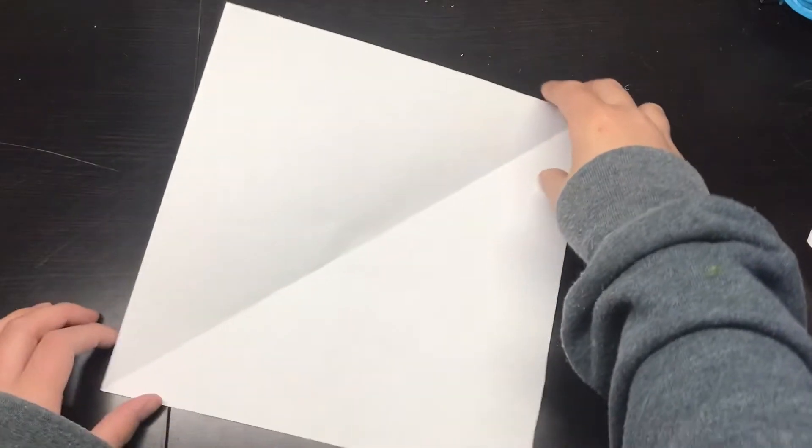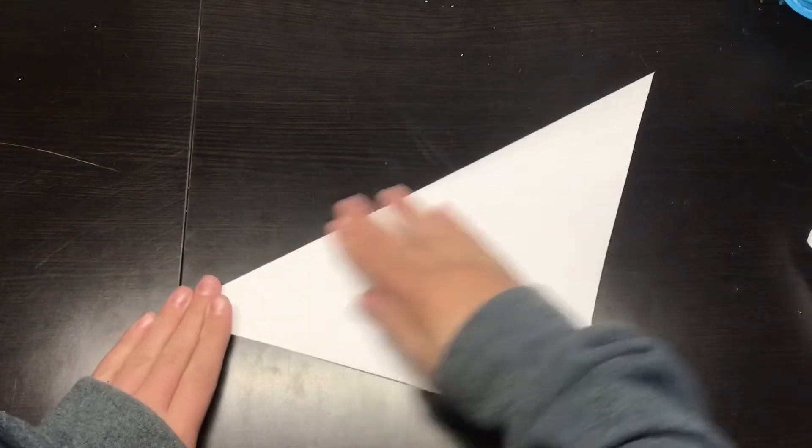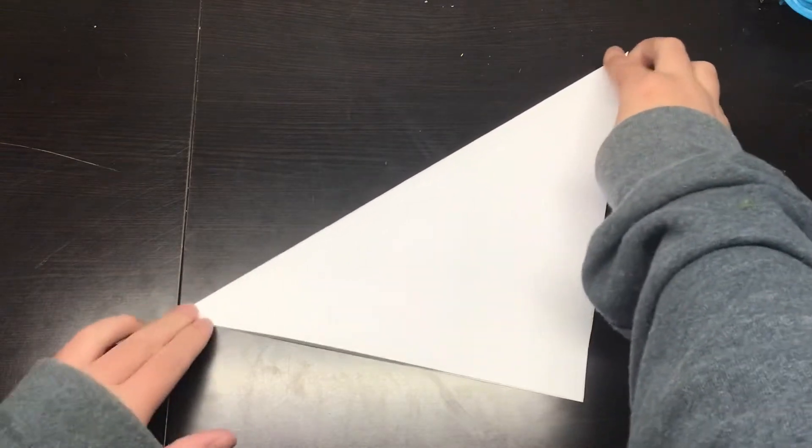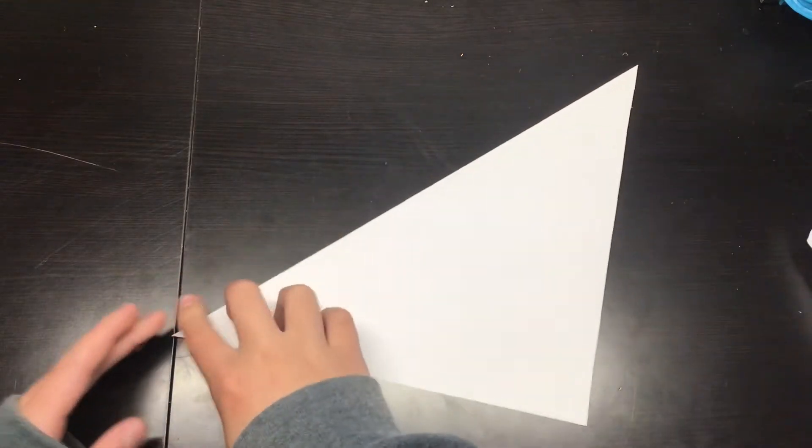Okay, so you have your square, fold that part down, and then fold this corner to this corner.